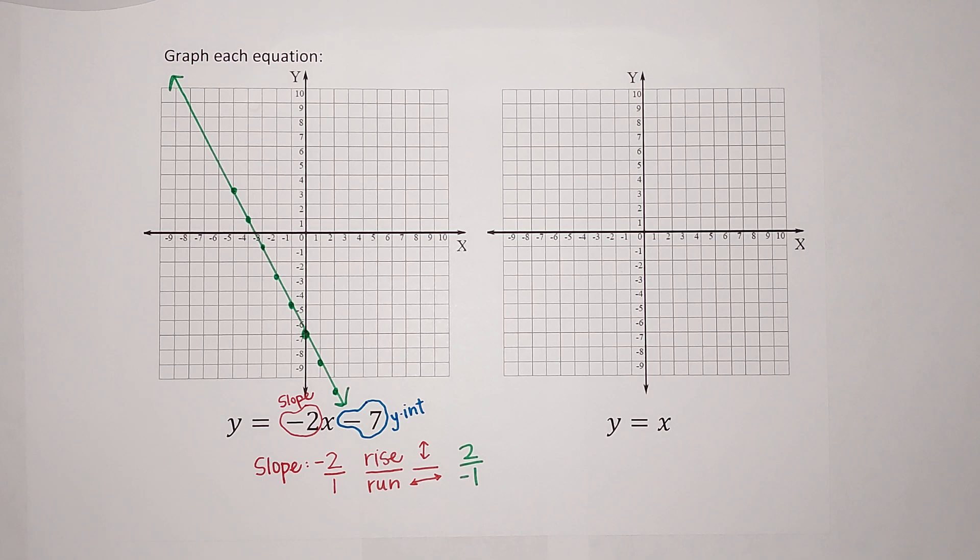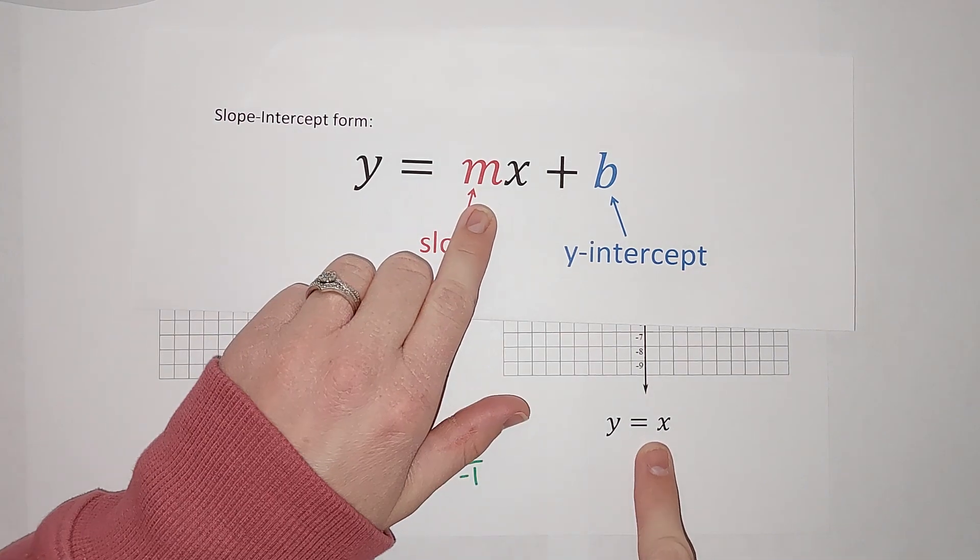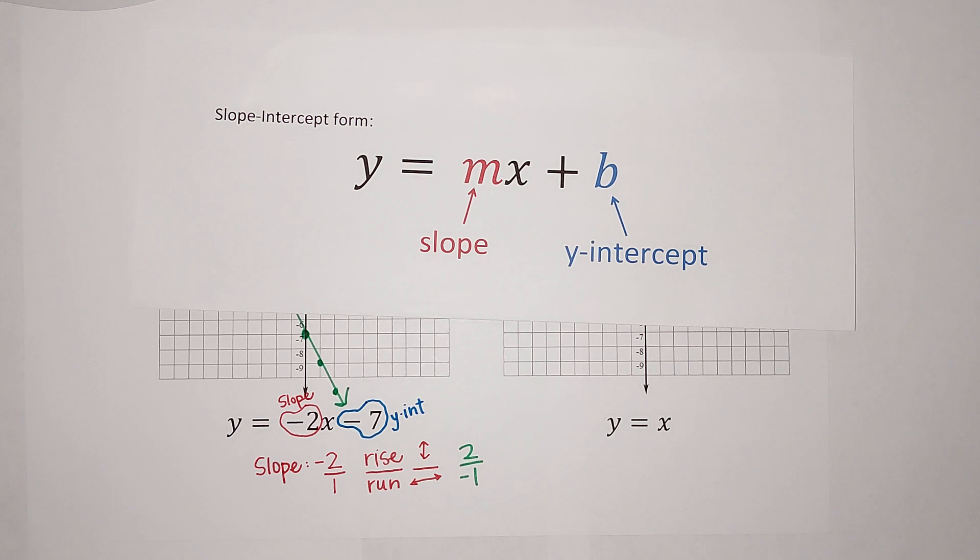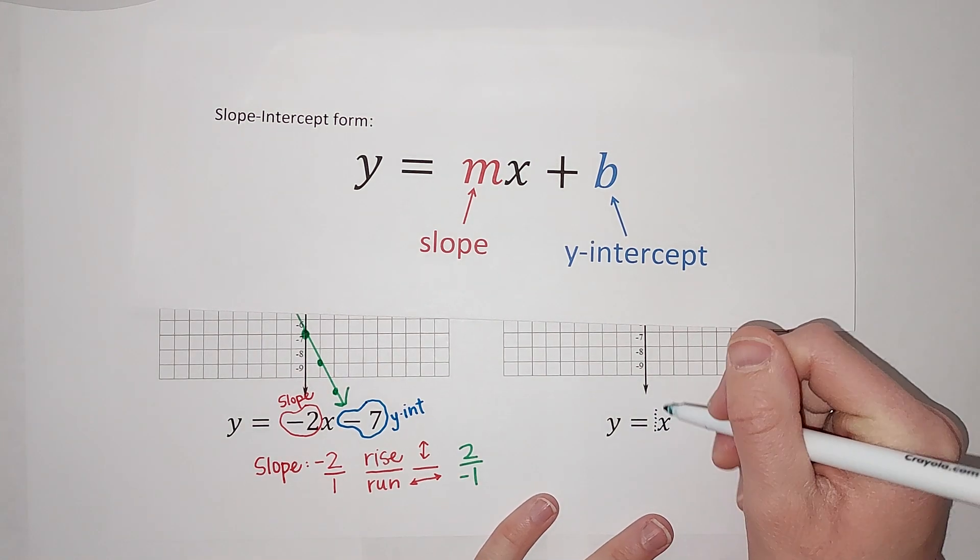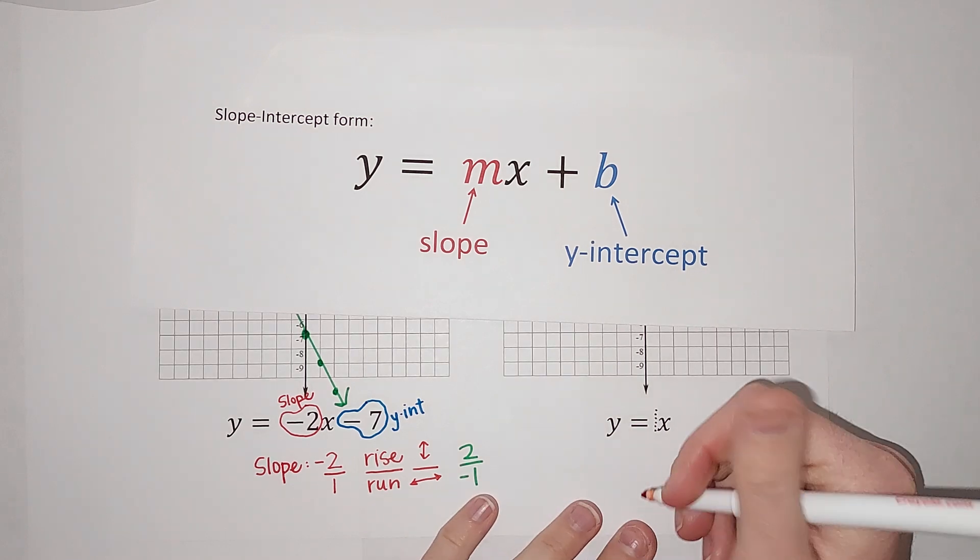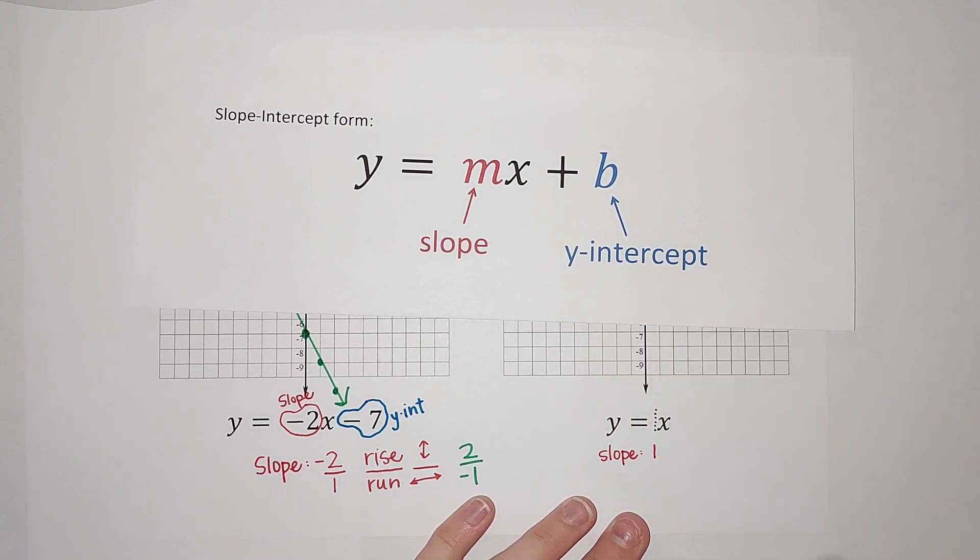All right, let's do one that looks a little funny. Y equals X. It's like, what does that even mean? So we're in slope intercept form, right? Because Y is by itself. But where's my M and where's my B? Well, the M is pretty easy to find because this is really just 1X, right? We just don't usually write the 1, but it really is 1X. So M or my slope is 1. So I'm going to write that down. My slope or a lot of times now you'll see it written as M. My slope is 1.